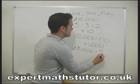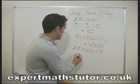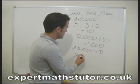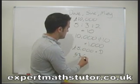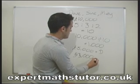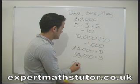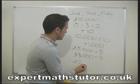Sue is going to get three lots, so she's going to get three thousand. And Mary's going to get two lots, so Mary is going to make two thousand.